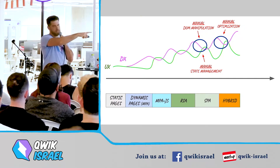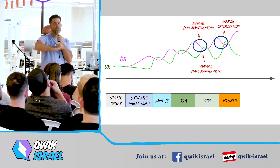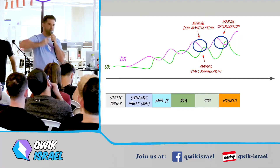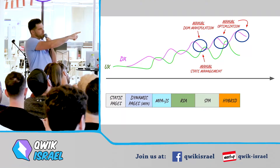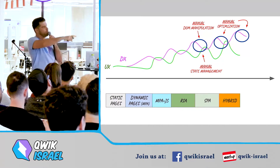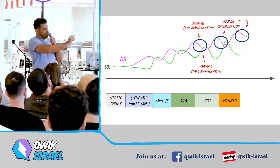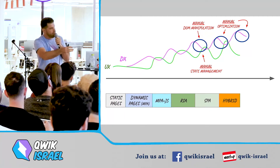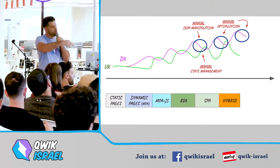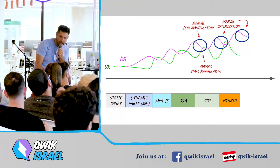The 'manual' thing keeps repeating. Every time we solve it, we improve developer experience. Even in the transition from SPAs to hybrid, and even in the current state of the art today, we still need to do manual optimizations.